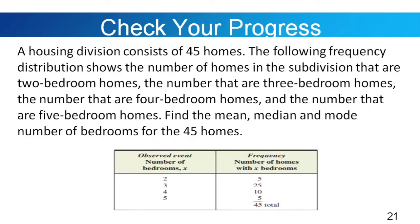Your check-your-progress will be considered as your assignment. A housing division consists of 45 homes. The following frequency distribution shows the number of homes that are 2-bedroom, 3-bedroom, 4-bedroom, and 5-bedroom homes. Find the mean, median, and mode number of bedrooms for the 45 homes, using only the formula for the ungrouped data.